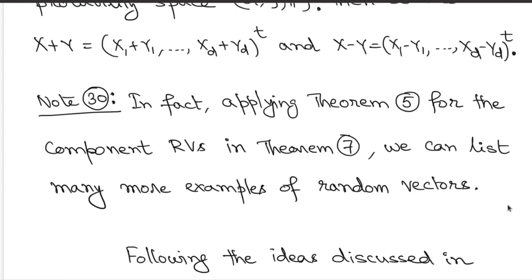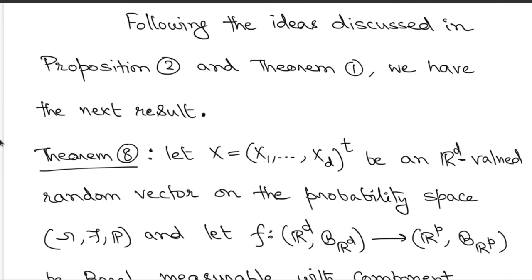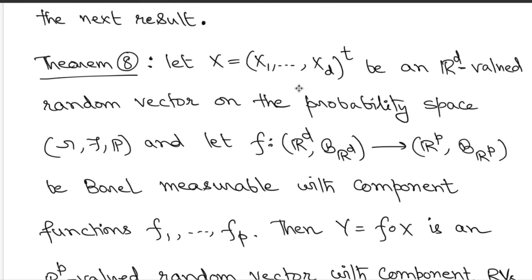Applying algebraic operations you can get many more examples of random vectors. For instance, coordinate-wise multiplication gives a random vector where the i-th component is X_i times Y_i — individual components are random variables so the result is a random vector. All of these are defined on the same probability space. These algebraic operations keep measurability intact. An important operation discussed earlier in Proposition 2 and Theorem 1 was the composition operation, which we now revisit for random variables and random vectors.